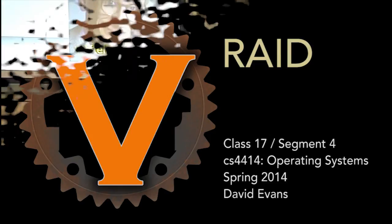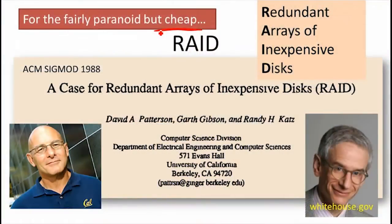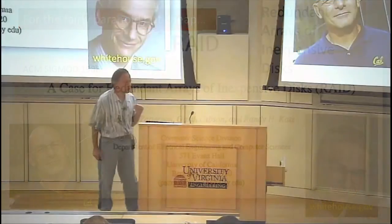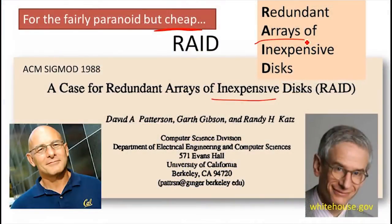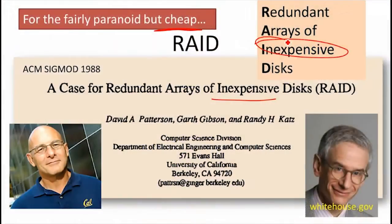Another technique used in modern systems — and this is for people who are quite paranoid, but fairly cheap, or at least initially motivated by cheapness — is what's called Redundant Arrays of Inexpensive Disks. That's what it was called in the original paper. The companies that started selling these a few years later didn't like having 'inexpensive' in their marketing materials, so they usually call it 'independent' instead.